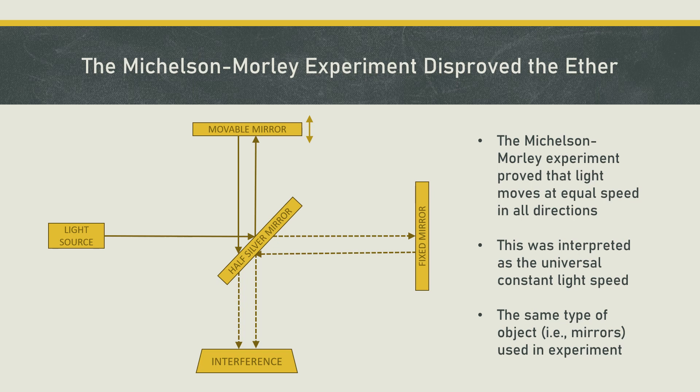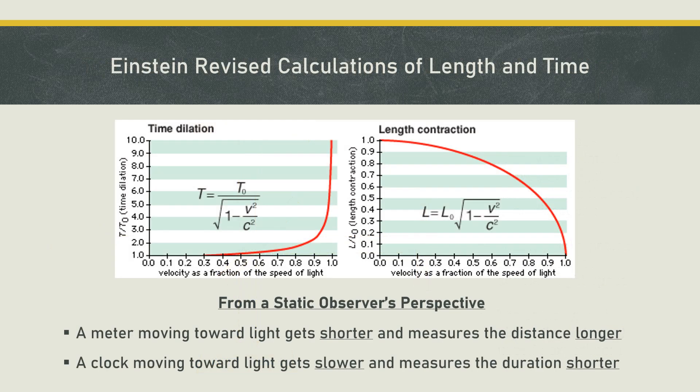This came to be known as the constant speed of light. It meant that there was no ether, hence no drag, and hence the speed of light was constant in all directions, even when the measurement was being done on a moving object such as the earth. Einstein then used the results of the Michelson-Morley experiment and discussed the effects of constant light speed on observations made using light.